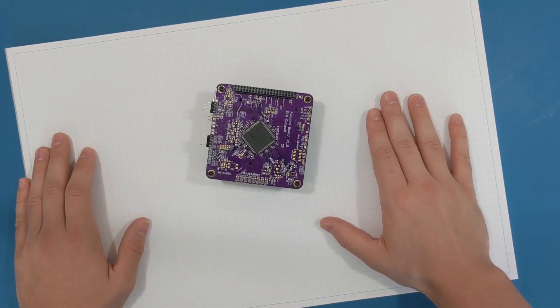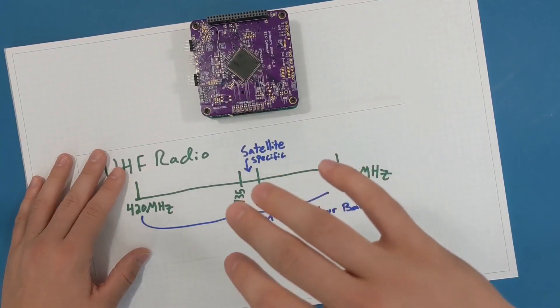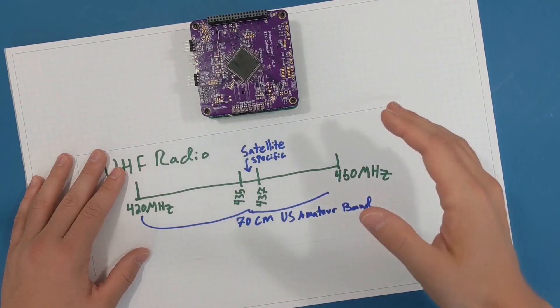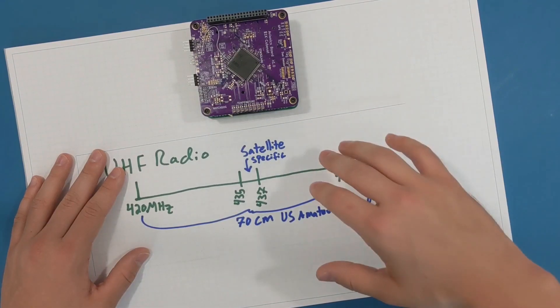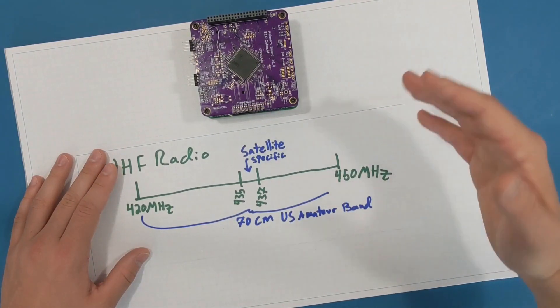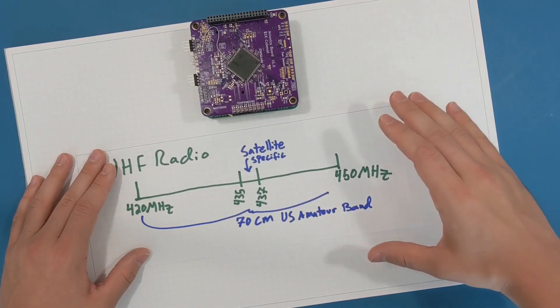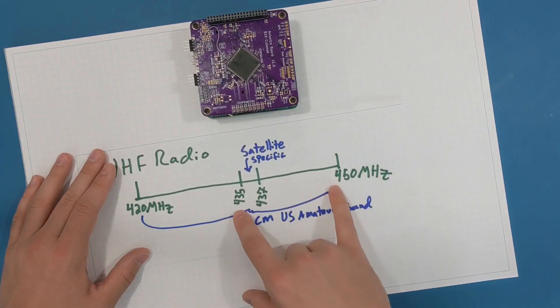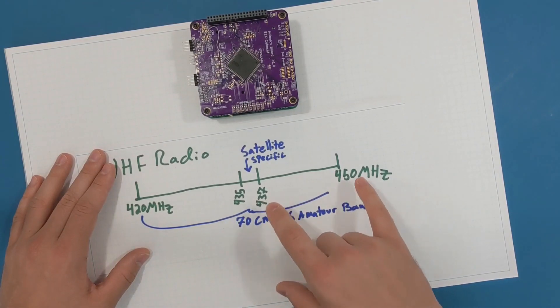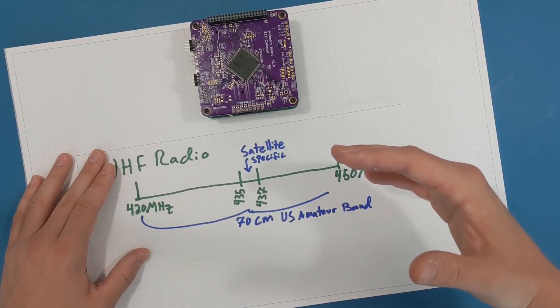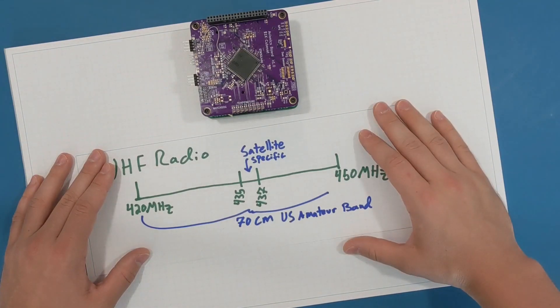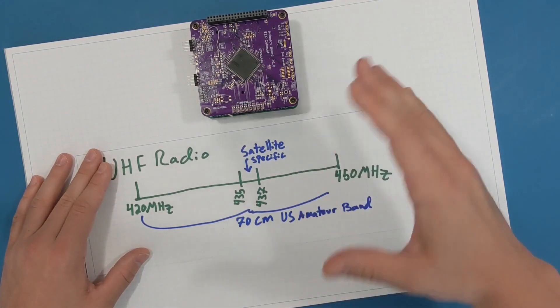So here are the basic parameters. I will be building a UHF radio that will operate in the 420 to 450 US amateur radio band for both uplink and downlink, and specifically it'll be between the 435 and 437 megahertz band which is for specifically for satellite communication. The radio will have about one watt of transmit power.